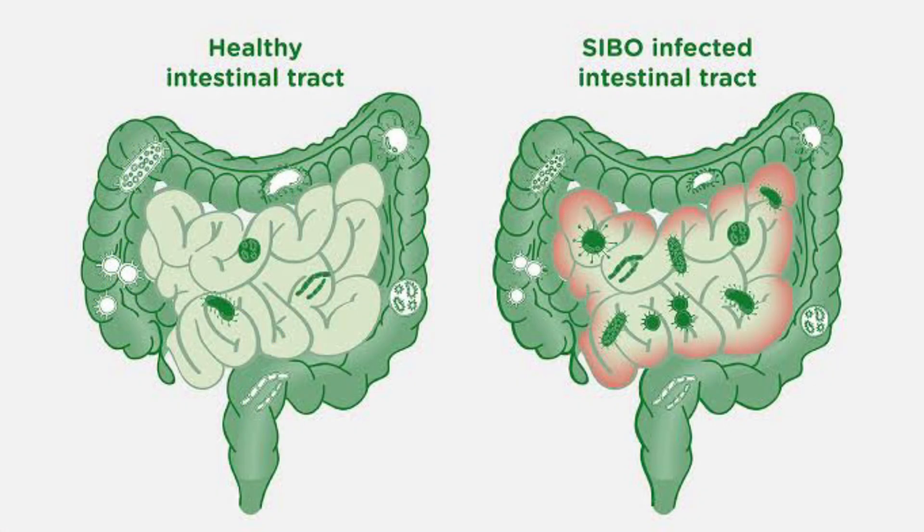So first off, SIBO — small intestinal bacterial overgrowth — that's dysbiosis, more bad bacteria than good, primarily in the small intestine. Typically, you have bacteria migrating up from the colon into the small intestine. We have three parts of the small intestine: duodenum, jejunum, ileum. So we're going from the bottom part of the colon — the cecum, the ileocecal valve — back up to the ileum in the small intestine.